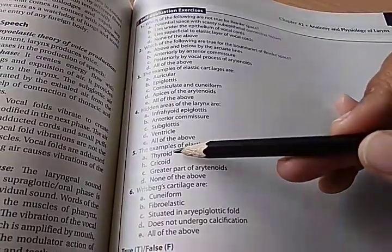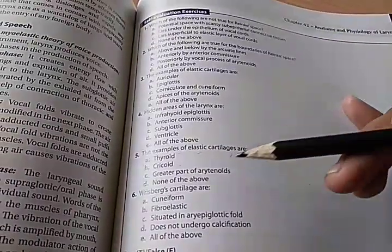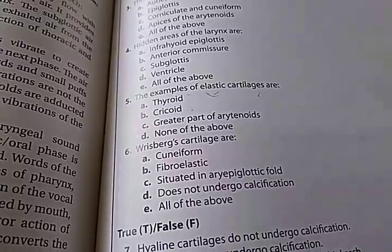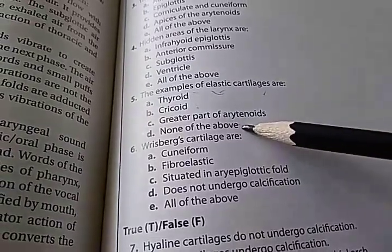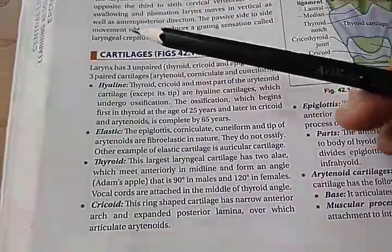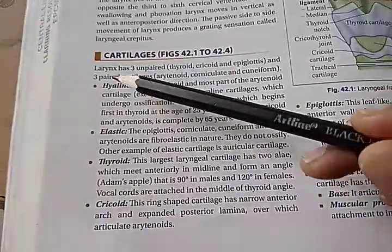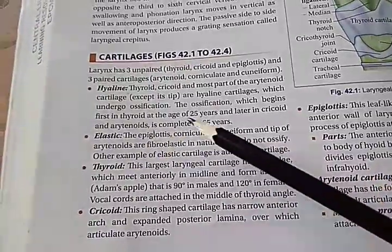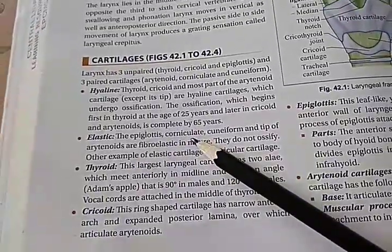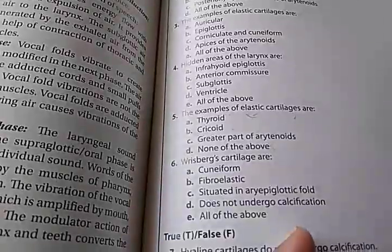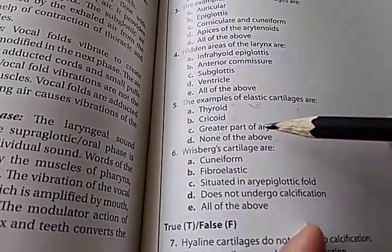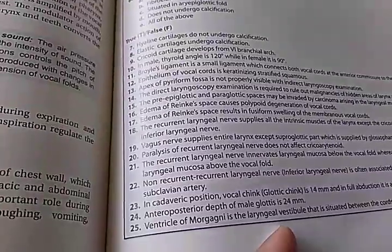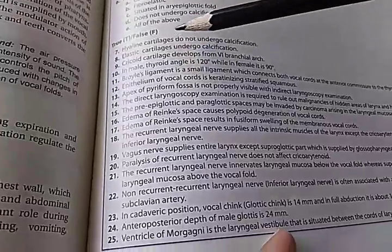The answer is none of the above. The elastic cartilages are actually the epiglottis, corniculate, cuneiform, and the tip of the arytenoids. In the question, they gave the greater part of arytenoids (not the tip), so the answer is none of the above. They also have true or false questions — like 'hyaline cartilages do not undergo calcification.' The answer is false, because hyaline cartilages do undergo ossification, beginning first in the thyroid cartilage at age 25.